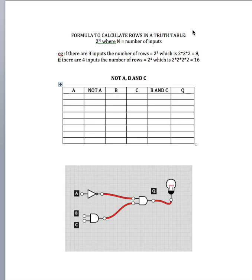Likewise, if I have 4 inputs, then that would be 16 rows. That works without fail, so always remember that. Now let's have a look at our truth table — we've got a NOT gate and an AND gate feeding into an AND gate.